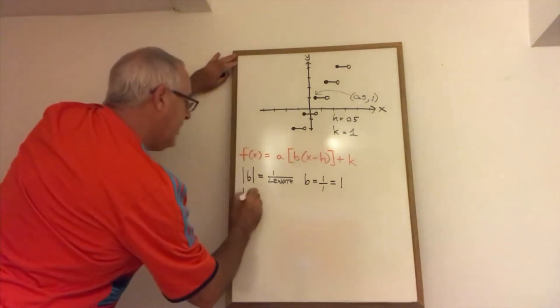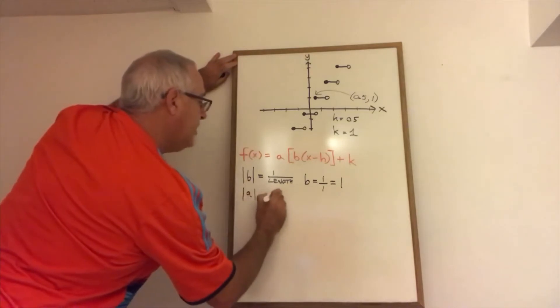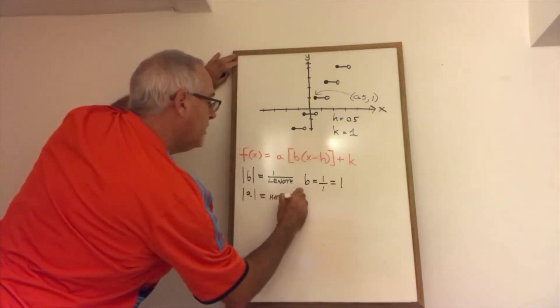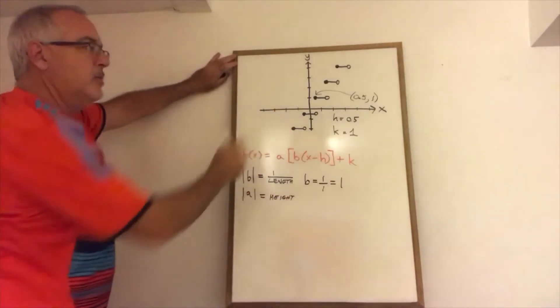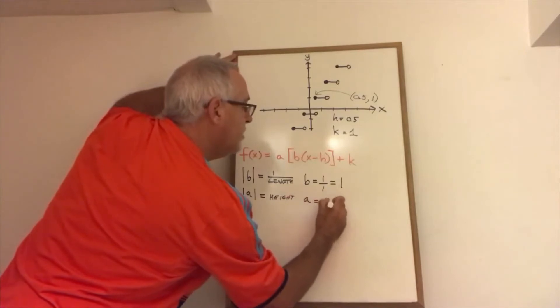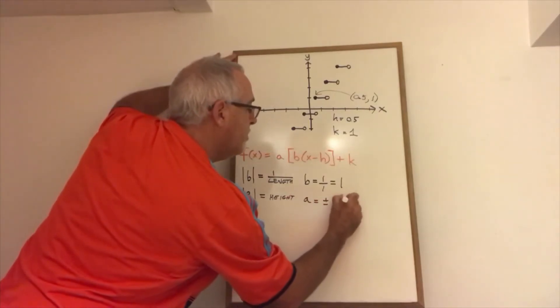The absolute value of a gives me the height of the steps. That means since the height is 1.5 units, a equals either positive 1.5 or negative 1.5.